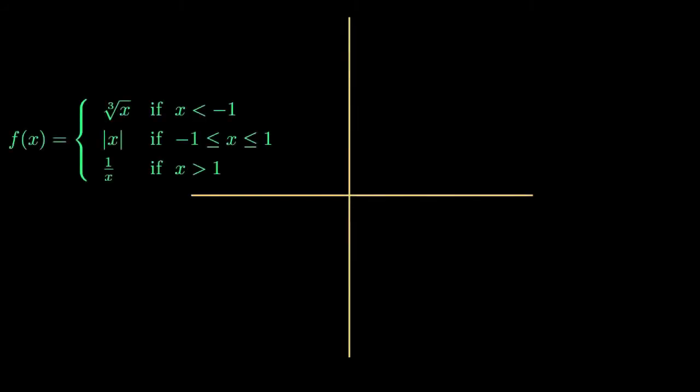When graphing a piecewise function, remember to read the equation right to left. This example is of a three-piece function. Note in passing, we'll be graphing the cube root function, the absolute value function, and the reciprocal function. But first, we need to construct the pieces of the domain.